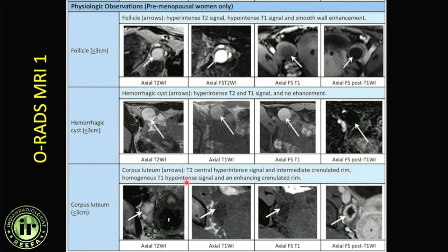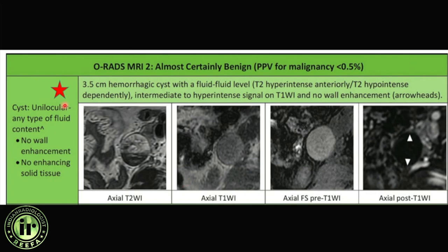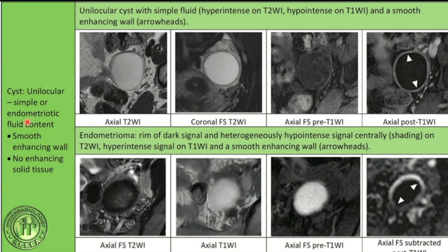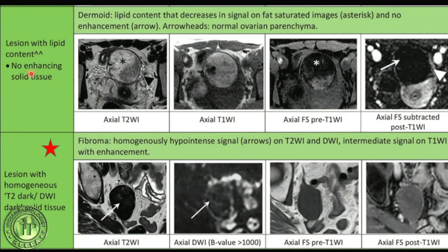ORADS 1 lesions are either physiological or simple — follicles, hemorrhagic cysts less than three centimeters, or confident corpus luteal cysts less than three centimeters. ORADS 2 is almost certainly benign. A unilocular cyst with no wall enhancement goes directly to ORADS 2 — these are the commonest large cysts seen, with no solid component and no enhancement; they may turn into cystadenomas but remain ORADS 2. A unilocular cyst with endometriotic contents showing the classic T2 shading sign is also ORADS 2.